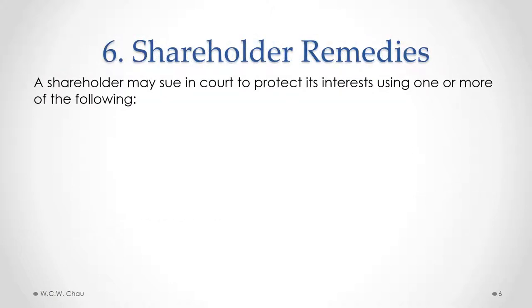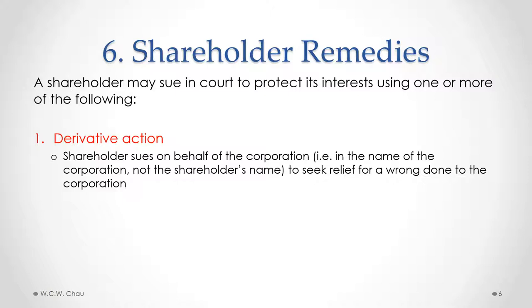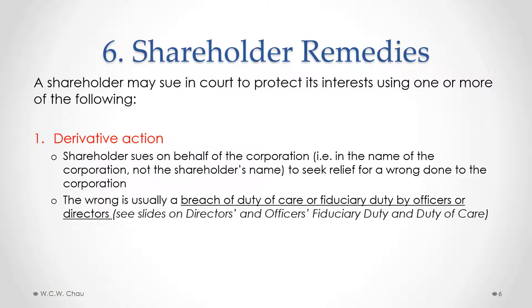Sometimes something happens with a corporation that a shareholder disagrees with, or it has a negative impact on particular shareholders, especially minority shareholders. There are a number of different remedies available to a shareholder. The first is called a derivative action. In a derivative action, the shareholder would sue on behalf of the corporation — suing in the name of the corporation, not the shareholder's name — seeking relief for a wrong done to the corporation. The wrong could usually be either a breach of a duty of care or fiduciary duty by the officers or directors. We'll talk in more detail about duty of care and fiduciary duty a little later on.